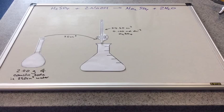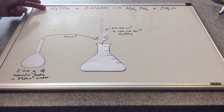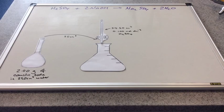I've cleared the board and made room for the equation. There's the equation for the reaction between the sulfuric acid and the sodium hydroxide in the caustic soda, and there's the balanced equation for that.